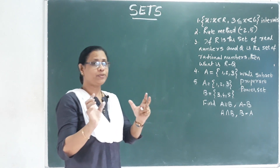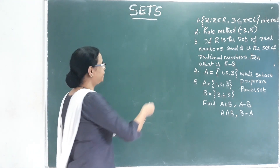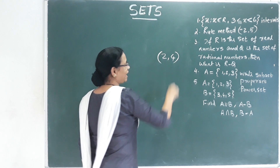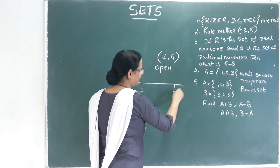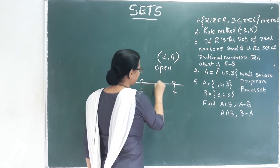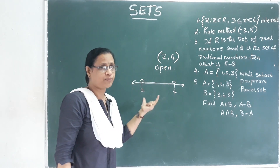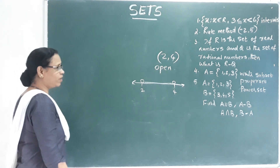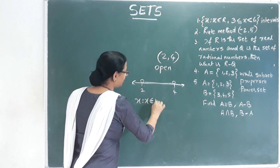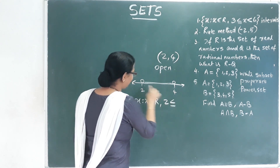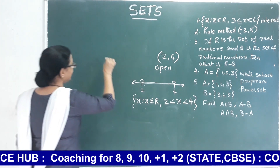Now we are talking about intervals. We are using many brackets. One bracket is (2, 4) — this is an open bracket. We denote it on a number line: 2 and 4, not including 4, not including 2. That means all numbers in between. We denote it in open bracket — there are infinitely many elements.